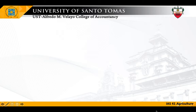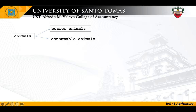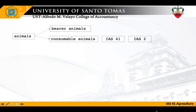For animals, we have bearer animals and consumable animals. The definition of bearer animals is residual in nature — if it is not a consumable animal, then it is a bearer animal. Consumable animals are those that are harvested as agricultural produce or sold as biological assets, for example livestock intended for the production of meat, livestock held for sale, or fish in farms. Consumable animals are accounted for using IAS 41 up to the point of harvest, and after the point of harvest, when already held for sale, accounted for using IAS 2. Whereas bearer animals are accounted for using IAS 41.